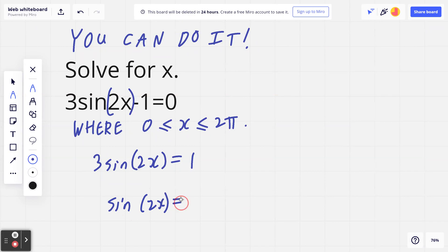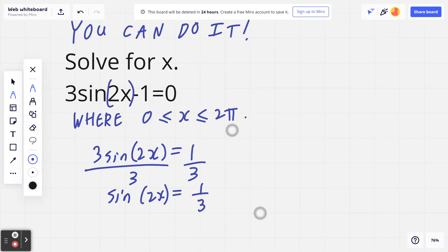Step number 2: if you think about the opposite of multiplying by 3, you can divide by 3. So sine of 2x equals 1 over 3.